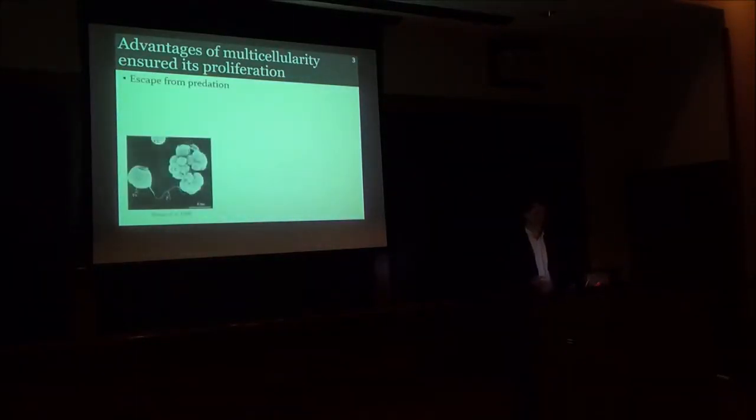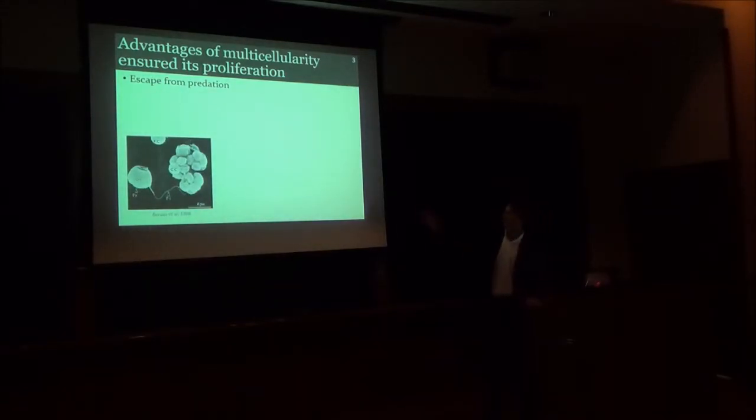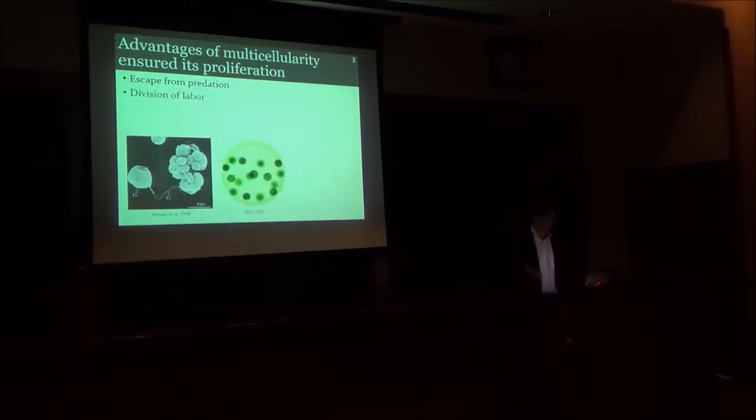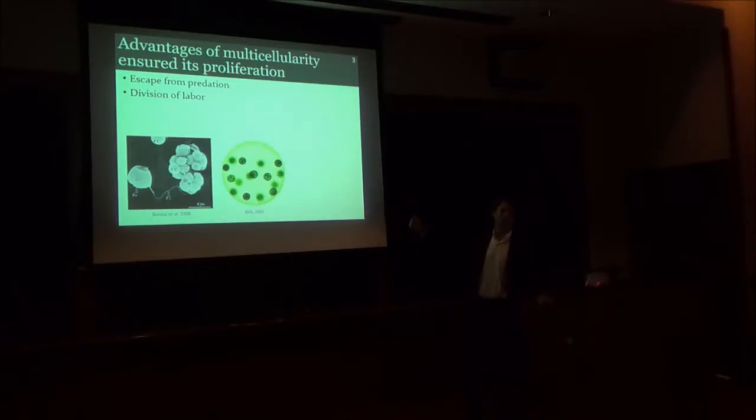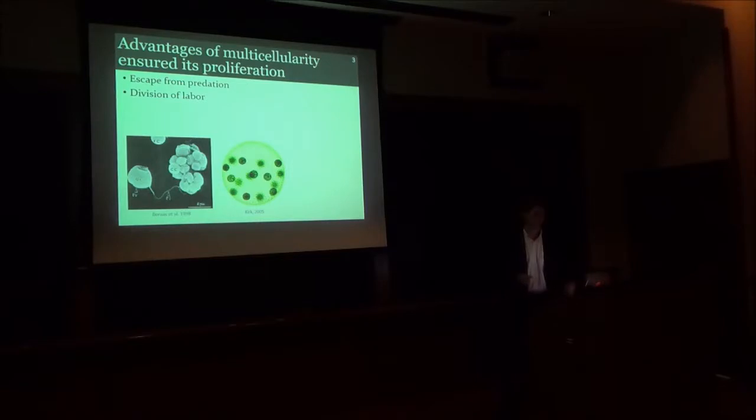By becoming multicellular, organisms can become bigger and thereby escape their predators, as these unicellular algae have done by clumping together and becoming bigger than their unicellular predators. Multicellularity also enables a division of labor among cells. As you can see in this spherical Volvox algae, there are smaller cells on the outside that specialize for motility and larger cells on the inside that specialize for reproduction.